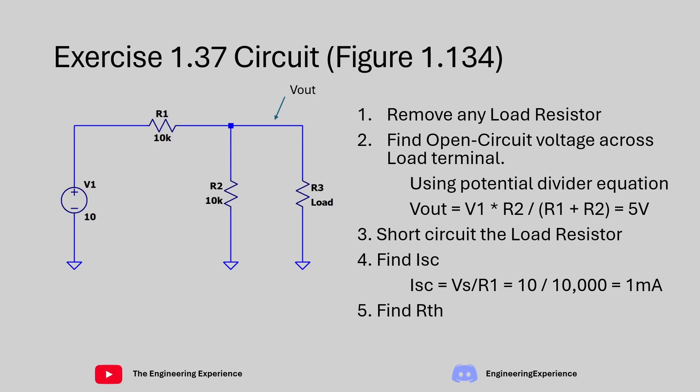Finally, we need to find the Thevenin equivalent resistance RTH, which equals the open circuit voltage VTH divided by ISC. Our VTH was 5 volts and our ISC was 1 milliamp, which gives us a Thevenin equivalent resistance of 5 kΩ.